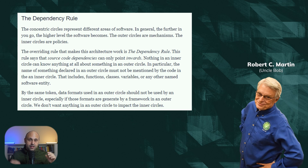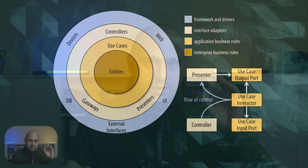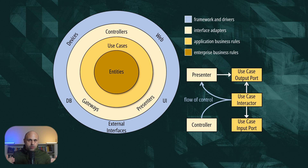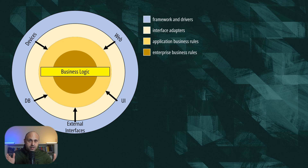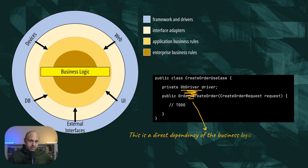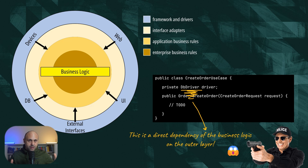The dependency rule states that all source code dependencies can only point inward. Before we cover the layers in detail, I want to simplify this diagram to focus on its principle, which is very simple. We place all low-level code that interacts with the infrastructure, user interface, or any other service at the edge of our application. The business logic is placed right at the core. The inner layer has no dependency on the outer layer — no class in the inner layer can import or hold a reference to a class in the outer layer.